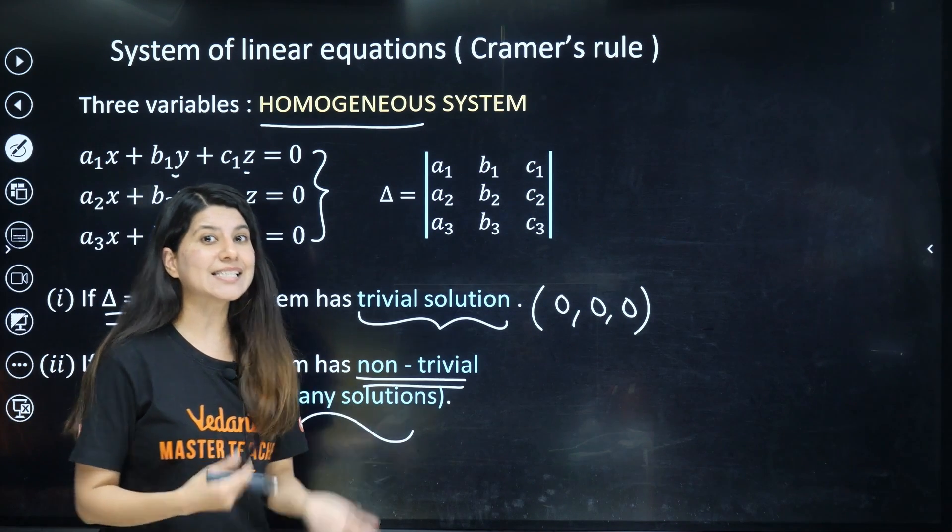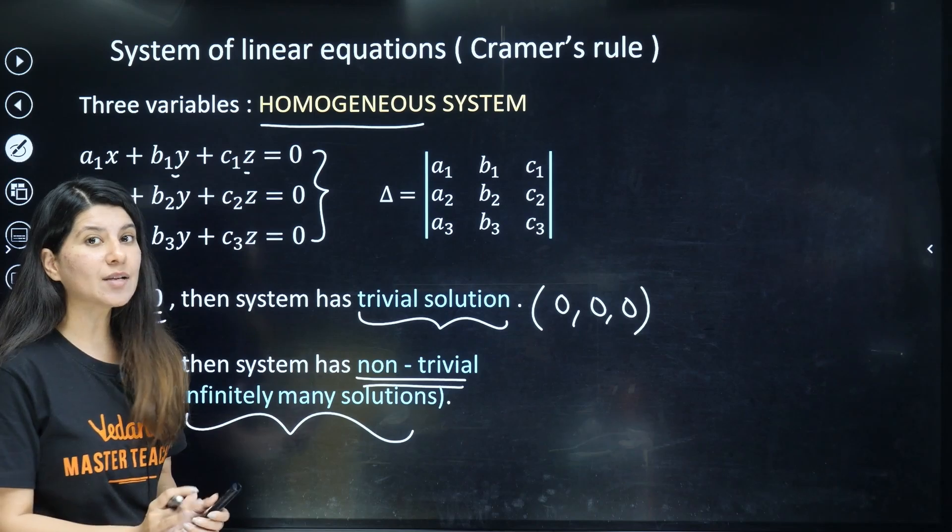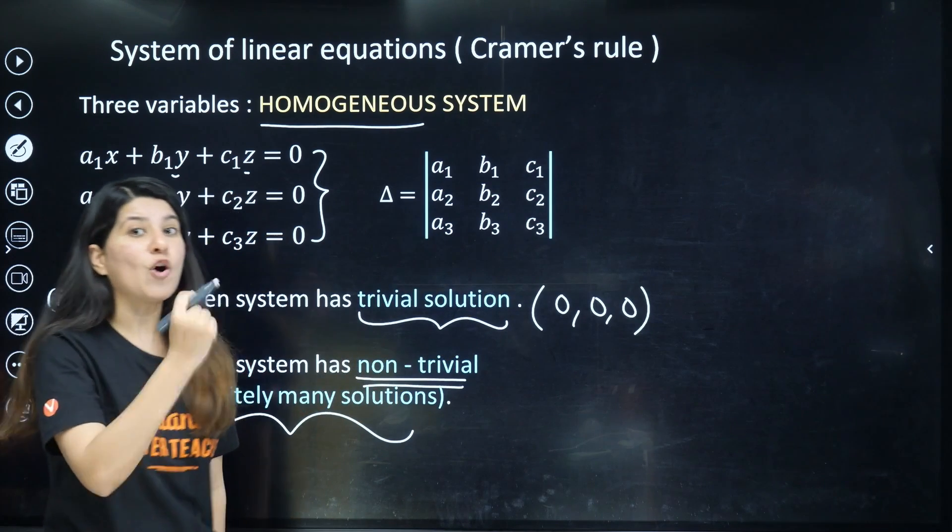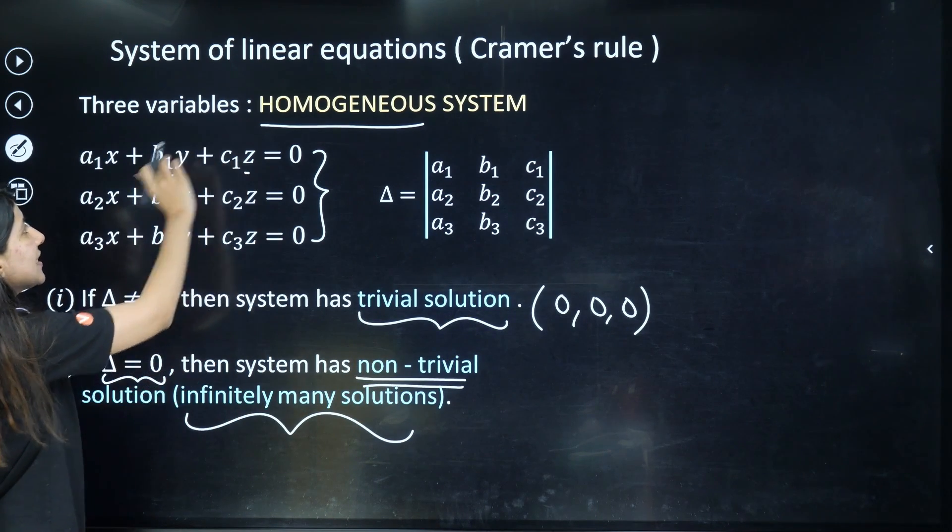By the way, what is determinant? What is delta? Here, delta is nothing but a determinant which is formed by coefficients of this particular system.